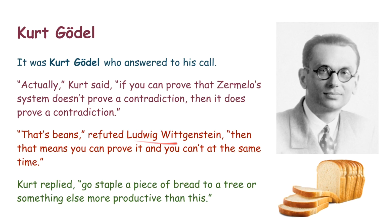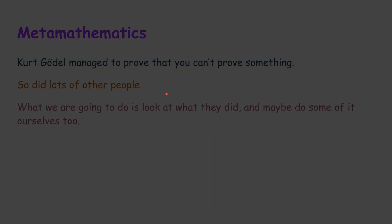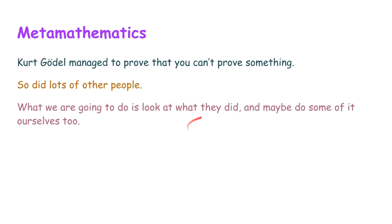Ludwig devoted a lot of time to trying to show that Kurt was wrong. He never did because Kurt is right. So he managed to prove that you can't prove something. He managed to prove that if Zermelo's set theory is consistent, it doesn't prove a contradiction, then it doesn't prove that it is consistent. And lots of other people later did. Paul Cohen joined in, showing that you can't prove a more specific and more applied thing called the continuum hypothesis. Lots of people showed that you can't prove certain things. And we're gonna look at what they did and maybe do some of it ourselves too. And that's it.